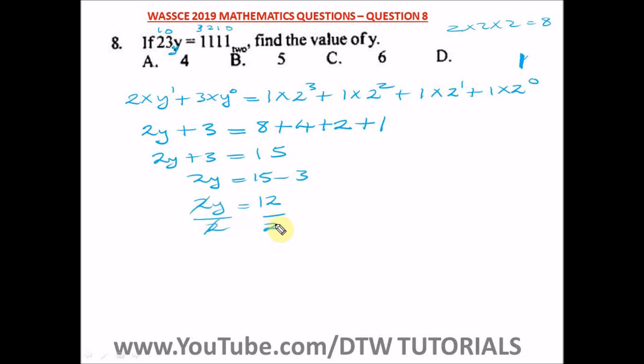To get y, we divide both sides by 2. How many times would 2 go in 12? 6 times. So we have y is equal to 6. Our answer for the value of y is 6, and our right option here is option C.